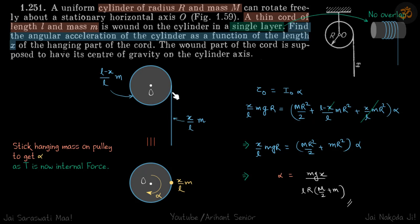What will be the mass of that part which is hanging? By unitary method, that will be (x/l)m. And the mass of the rest of the thread which is wound on the cylinder, that will be [(l-x)/l]m.